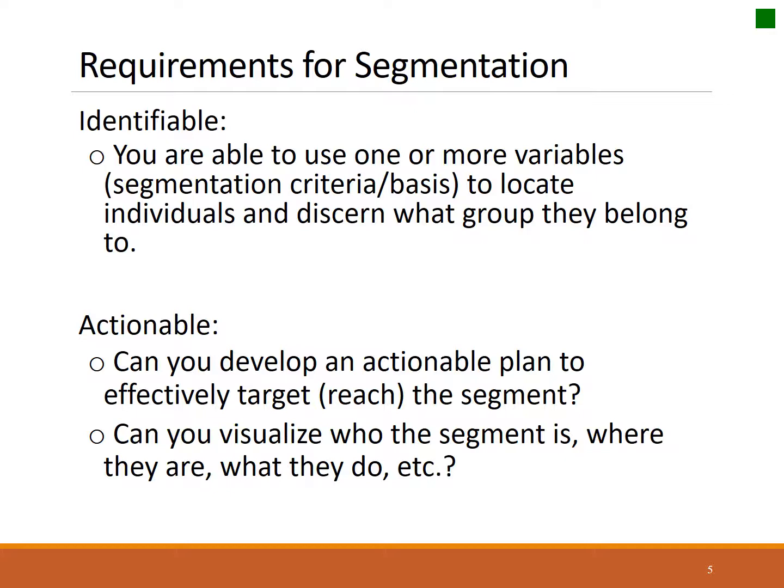Actionability includes the idea that when we choose a market segment, we want a group of consumers that we can reach, that we can have contact with, that we can get our product to. If we can't reach them from a marketing perspective, it's very difficult to make an exchange happen, and it wouldn't lend itself to a very good market segment outcome.